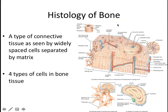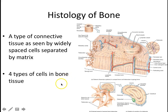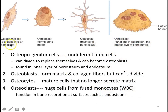Looking at bone histology, as you've already seen in lab, bones are organized in rings — this structure is called an osteon. The cells of the connective tissue are separated quite a bit — they're not dense like epithelial tissue. You're going to see four different types of cells in bone tissue. The first type is called an osteoprogenitor cell or osteogenic cell. These cells are undifferentiated and they are dividing cells, and these cells will become osteoblasts.